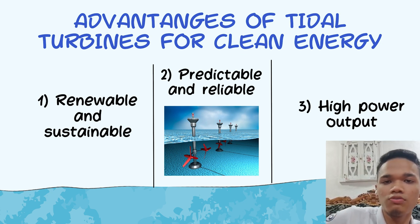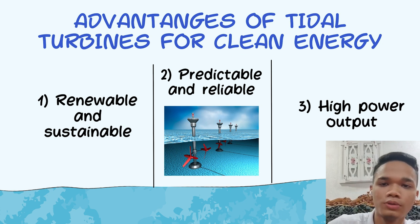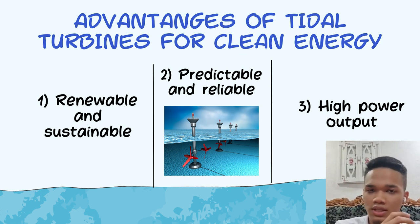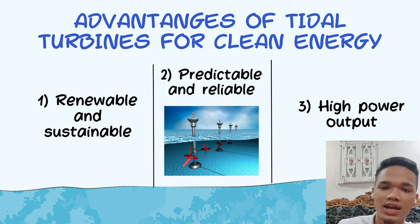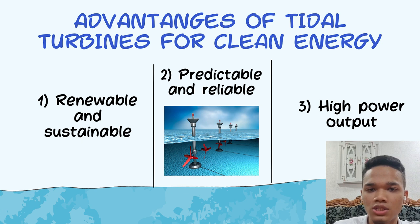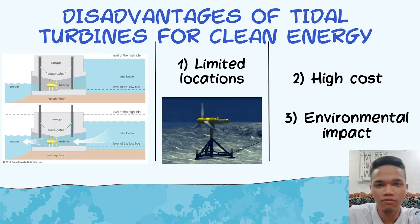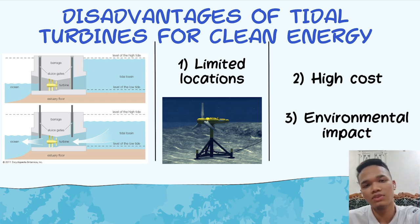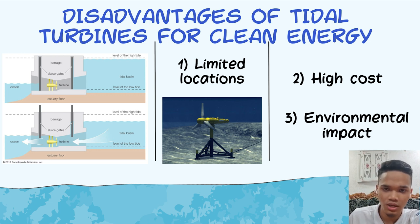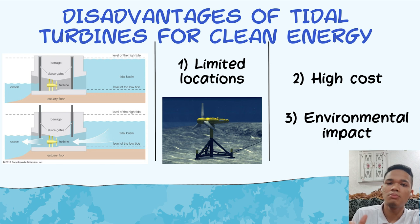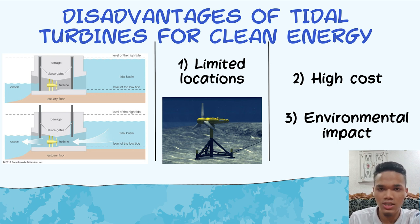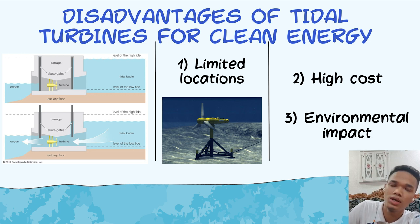Third point of advantages is high power output. Tidal power can make more electricity than wind power with less space and equipment, because water is heavier than air. For the disadvantages of tidal turbines: first point is high costs. Tidal power is very costly because it needs a lot of money and work to build and run the plants. It also has to compete with other types of power that are cheaper, like wind and solar power.